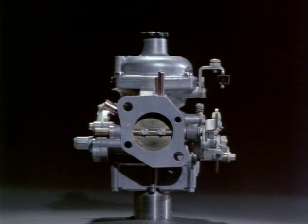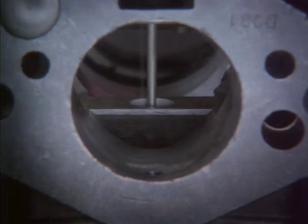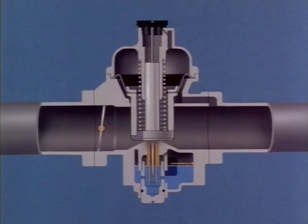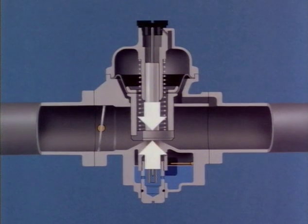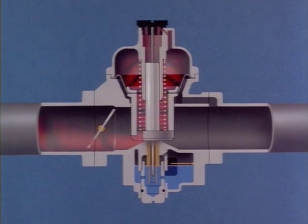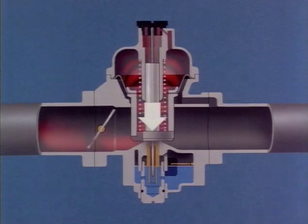There is another type of carburettor called a variable jet carburettor. One side of the venturi is replaced by the bottom of a piston, which moves up and down in a finely machined cylinder. When the engine is at rest, the pressure on both the underside and top side of the piston is atmospheric and therefore equal. With the engine running, air is drawn out of the interior of the dome, the pressure falls, and the piston is lifted by the greater atmospheric pressure below.